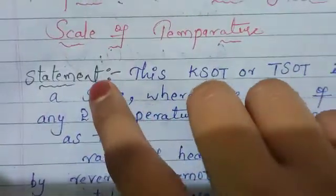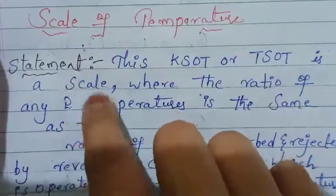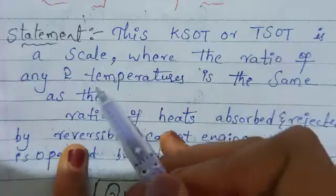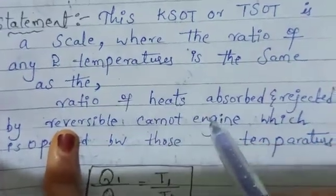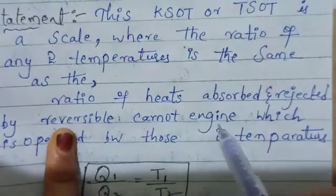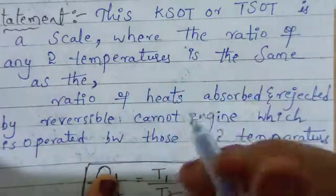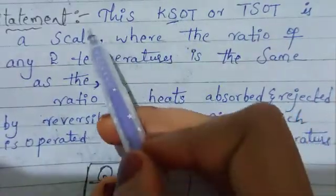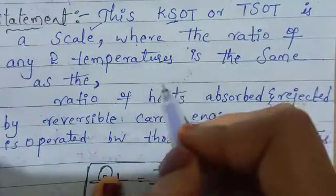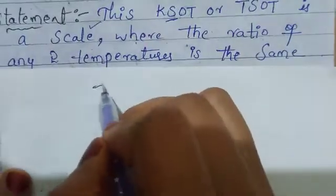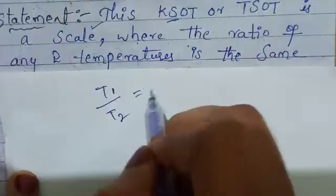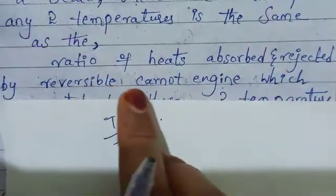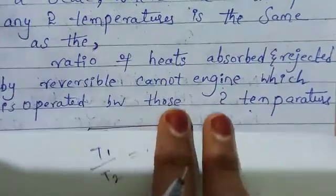First, we will discuss the proof. This Kelvin scale of temperature, or thermodynamic scale of temperature, is a scale where the ratio of any two temperatures is the same as the ratio of heats absorbed and rejected by the reversible Carnot engine, which is operated between those two temperatures.